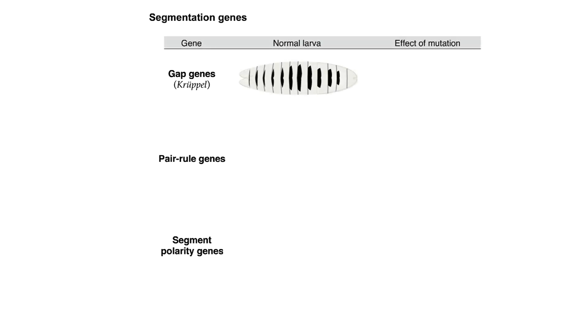The segmentation genes are divided into three groups: the gap genes, the pair rule genes, and the segment polarity genes. Mutations in the gap genes — which include Krüppel, hunchback, giant, and tailless — result in the deletion of one or more adjacent segments.